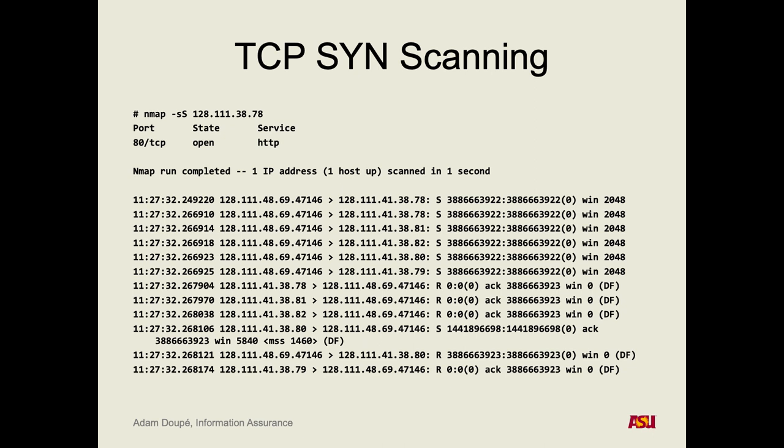Now that we know the IP address and open services on a machine, what other information would we want? The operating system. Why is that useful? With the OS identified — for example if it's Windows XP — there are highly likely known exploits that will work on that machine, since Windows XP is very old.